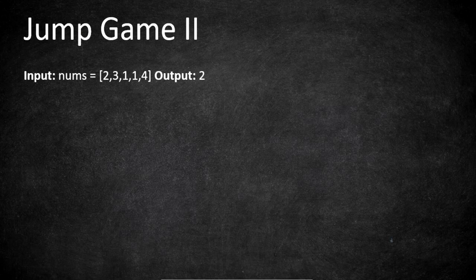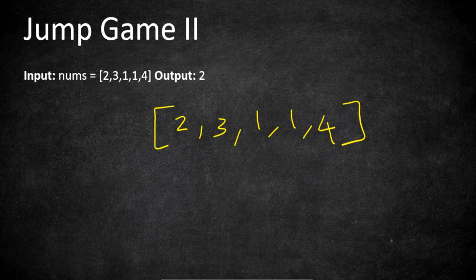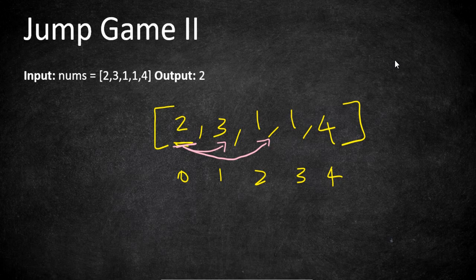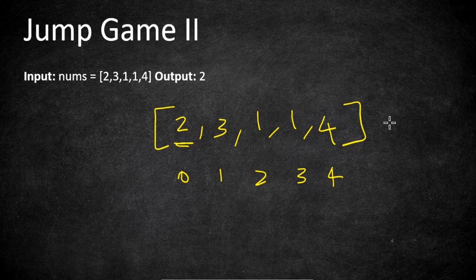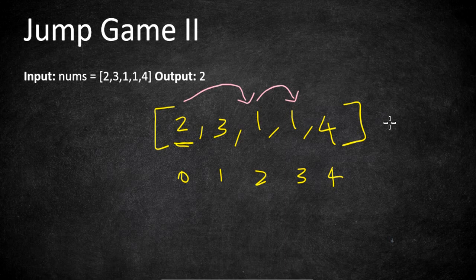Here is our given input array nums and we have to return the minimum number of jumps needed to reach the last position. The value at each position is the maximum number of jumps you can take from that position. From index 0 the maximum number of jumps you can make is 2, so you can reach index 1 or index 2. If we jump to index 2, from index 2 you can make a maximum of 1 jump, moving to index 3. From index 3 again you can make only 1 jump, reaching the last position. That's 3 jumps total.